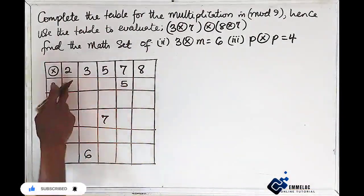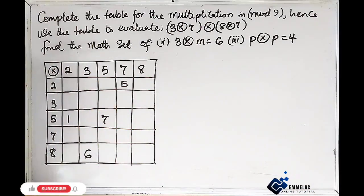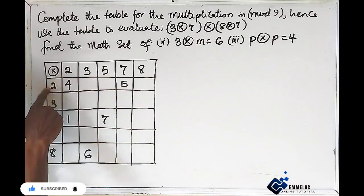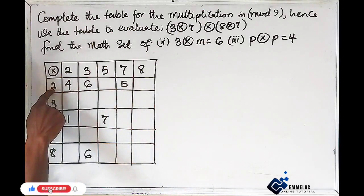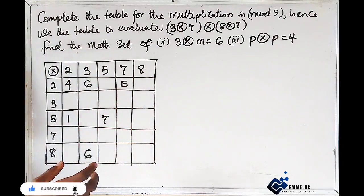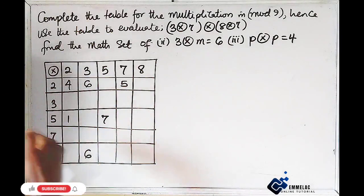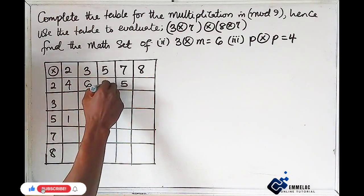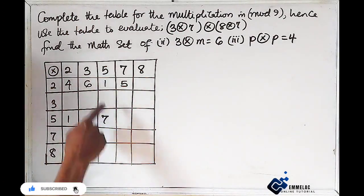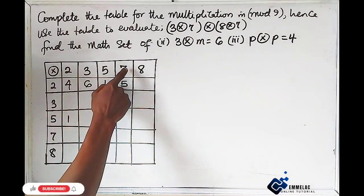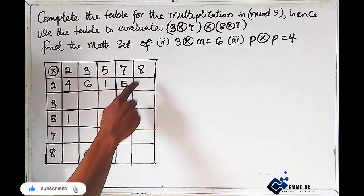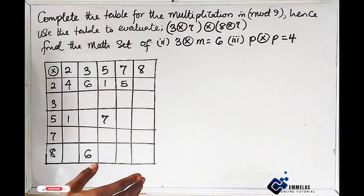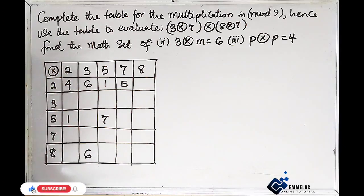For example: 2×2 = 4, and since 4 is less than 9, it stays as 4. Similarly, 3×2 = 6 stays as 6. But 5×2 = 10, and 10 minus 9 gives remainder 1. Then 7×2 = 14, and 14 minus 9 gives 5. And 8×2 = 16, and 16 minus 9 gives 7.